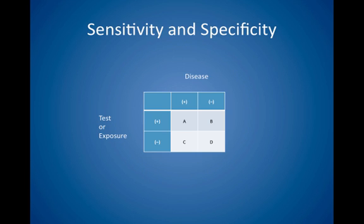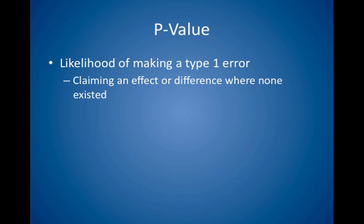This is a biostatistics table that you should be able to utilize to determine sensitivity, specificity, positive predictive value, and negative predictive value. On the left side is the test or exposure; across the top is the presence or absence of disease. Sensitivity is A over the sum of A plus C; specificity is D over the sum of B plus D; positive predictive value is A over the sum of A plus B; and negative predictive value is D over the sum of C plus D. The p-value reflects the likelihood of making a type 1 error, or claiming an effect or difference where none existed — that is, the results were obtained by chance. When we reject the null hypothesis, we are saying the new treatment works, and we use the p-value to express our confidence in the data.